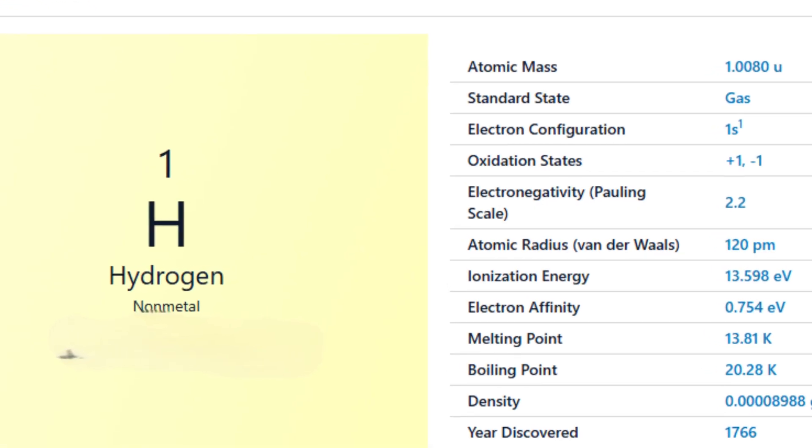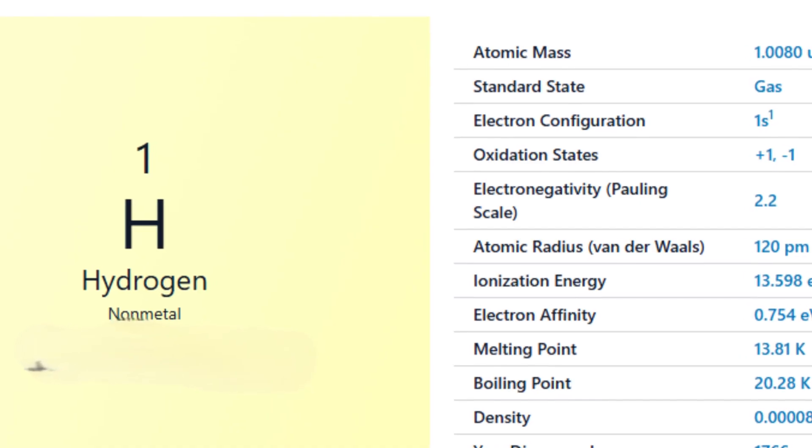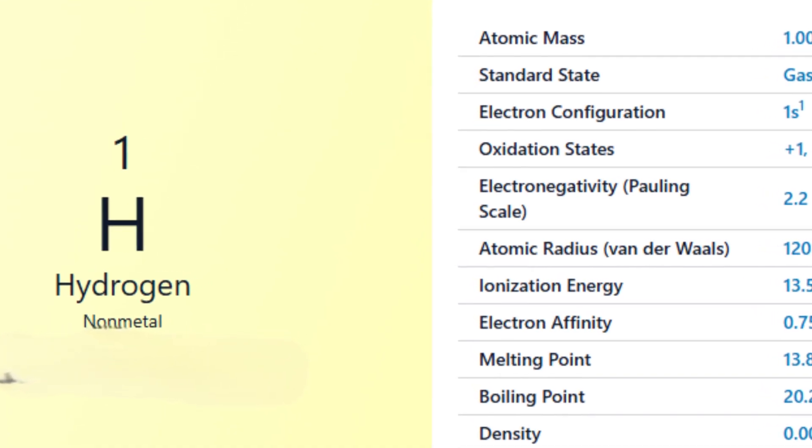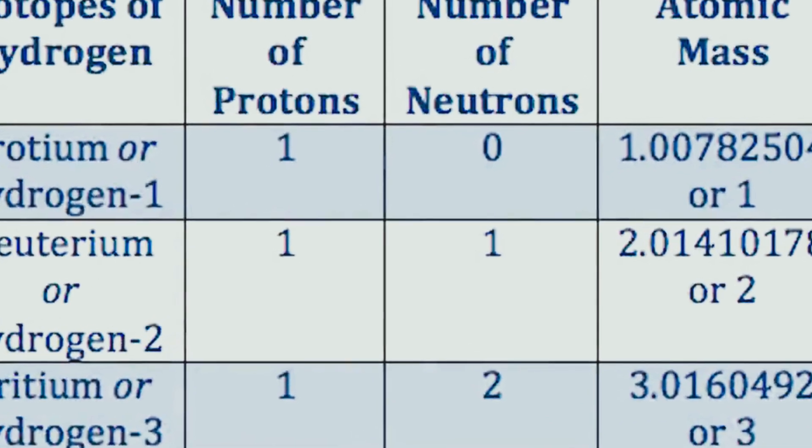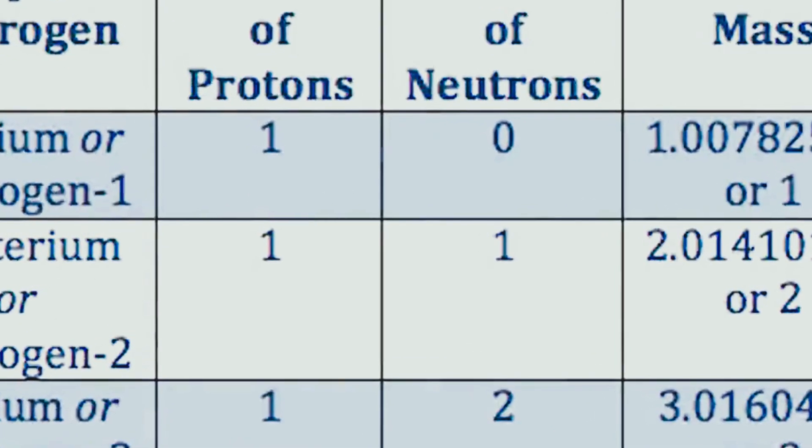Neutrons, on the other hand, are like the quiet bodyguards of the nucleus. They add mass, help glue the atom together, and keep protons from flying apart since protons all carry positive charges and repel each other.